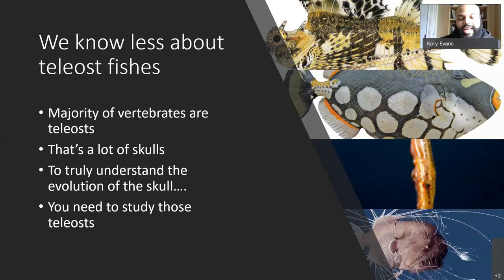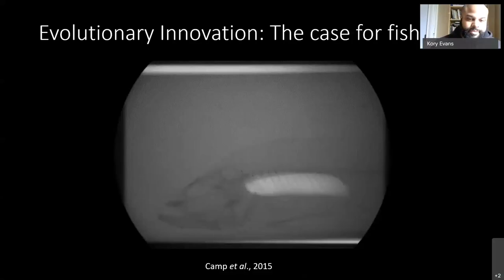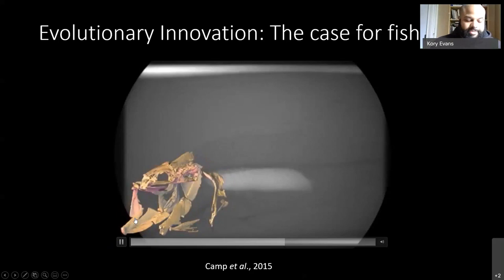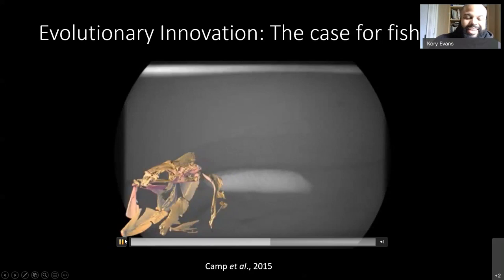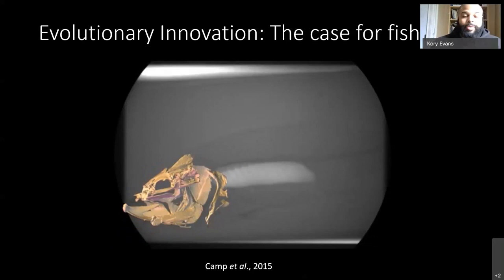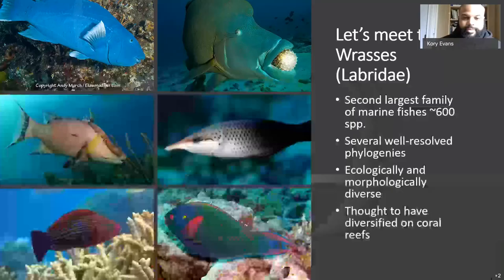Fishes are doing things with their morphology that are mind-blowing compared to other vertebrate groups. Here we have a largemouth bass suction feeding — look at how many bones move when this bass opens its mouth. If you open your jaw, one bone moves. But for most teleost fishes, their skulls are highly kinetic and really dynamic. This is why it's important that we focus attention on the evolution of teleost skulls.